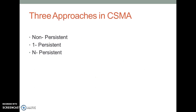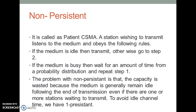There are three approaches in CSMA: Non-Persistent, One-Persistent, and P-Persistent. Non-Persistent, also called patient CSMA. A station wishing to transmit listens to the medium and obeys the following rules: if the medium is idle, then transmit; otherwise, go to step 2. If the medium is busy, then wait for an amount of time from a probability distribution and repeat step 1.